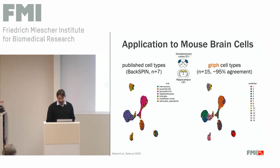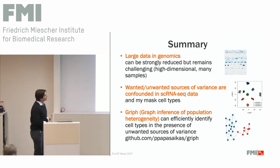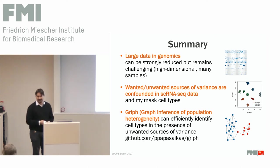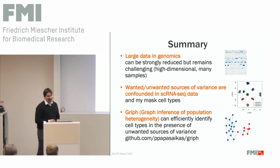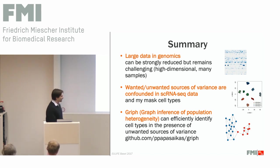I'll skip one slide for reasons of time and go to the summary. I showed you that there are still some data problems in genomics, even though they're smaller than in the imaging community, because we have very high-dimensional data typically consisting of many samples, and algorithmically there is still a lot of work to do. We have wanted and unwanted sources of variation, especially in single-cell RNA sequencing data — this is a huge issue and only few tools can deal with it. That's actually the main reason why we developed GRIF. If you have such data or just want to have a look, GRIF is available on GitHub. Happy to take questions — thank you.